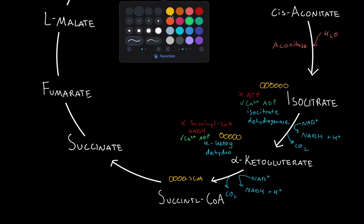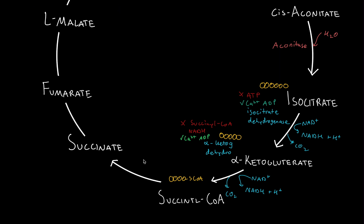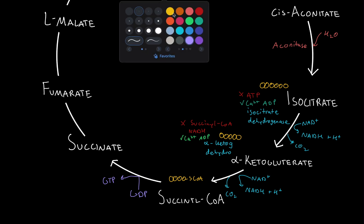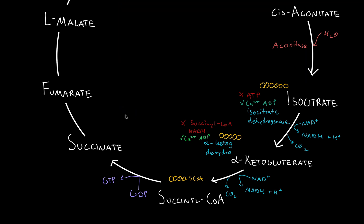To go from succinyl-CoA to succinate, we need GDP, which is converted to GTP. In doing so, we lose our coenzyme A to produce succinate — now just four carbons.